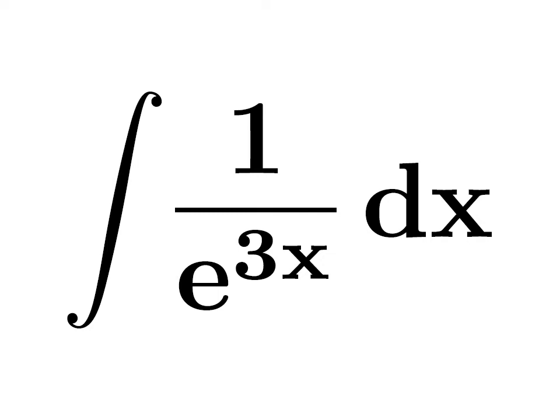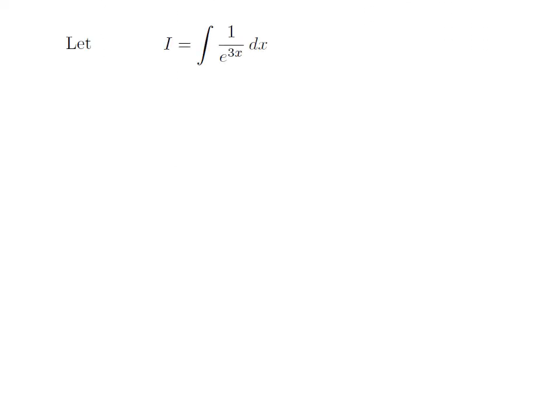In this video, we will learn to integrate 1 divided by exponential of 3x. Let i be equal to integration of 1 divided by e to the power 3x with respect to x. I have moved e to the power 3x to the numerator, so the exponent of e became minus 3x. The integral i is equal to integration of e to the power minus 3x with respect to x.